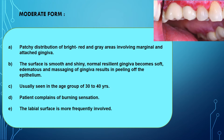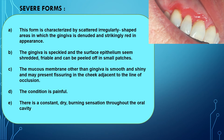The labial surface is more frequently involved. In the severe form of desquamative gingivitis, it is characterized by scattered, irregularly shaped areas in which the gingiva is denuded and strikingly red in appearance. The surface epithelium appears friable and can be peeled off in small patches. The mucous membrane other than gingiva may be present along the cheek adjacent to the line of occlusion. The condition is painful with a constant dry burning sensation throughout the oral cavity.